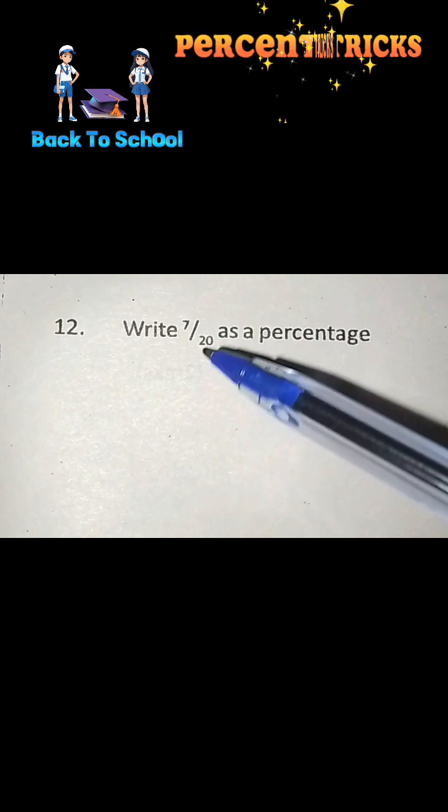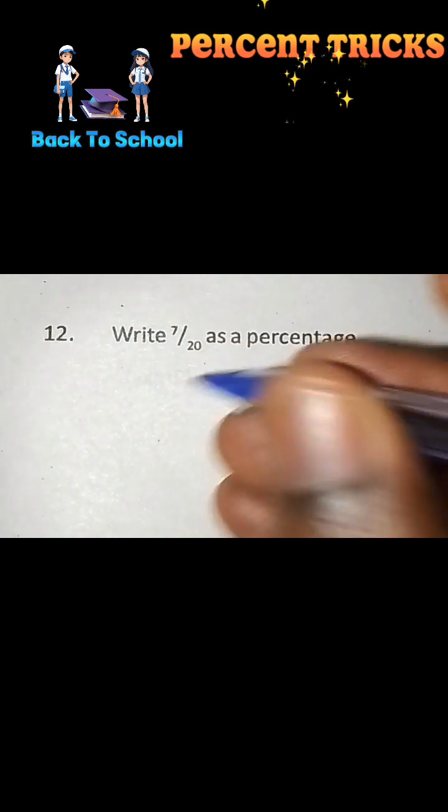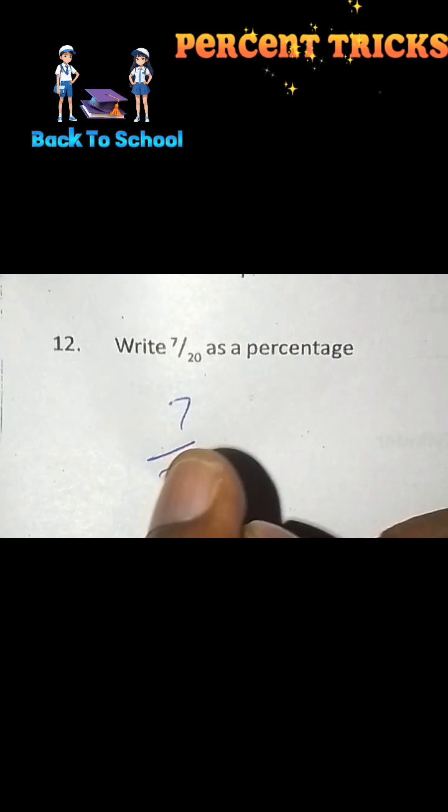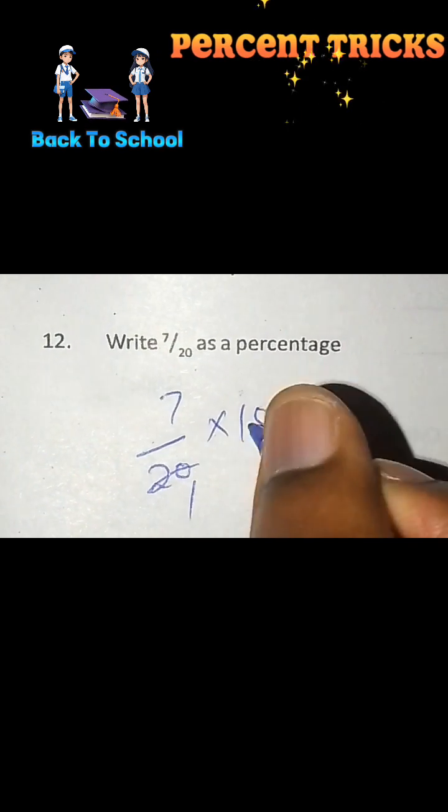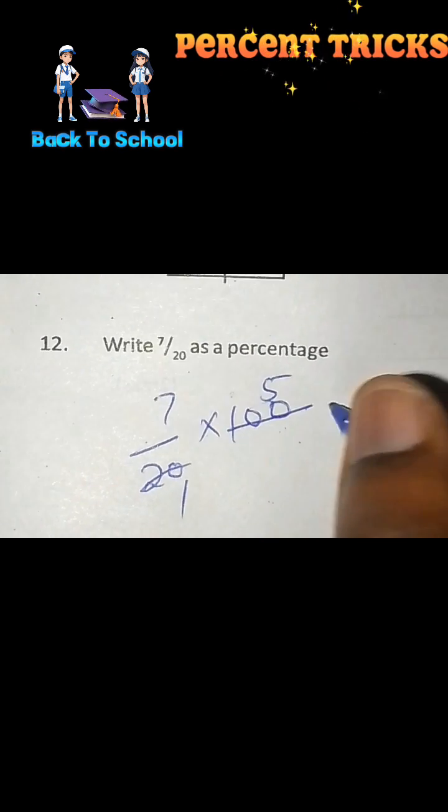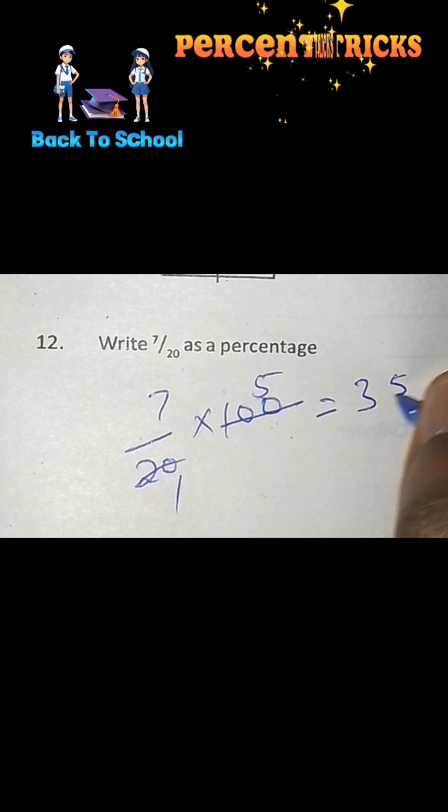Write 7 over 20 as a percentage. So here we shall take 7 out of 20 multiplied by 100. So 20 here once, 20 into 100 is 5, and the answer is 35%.